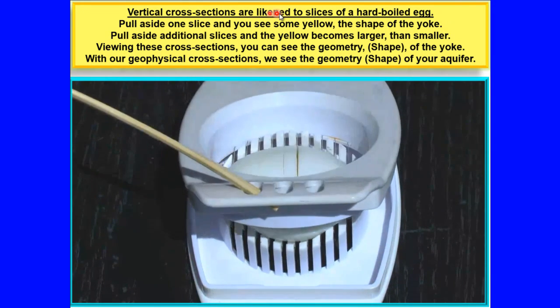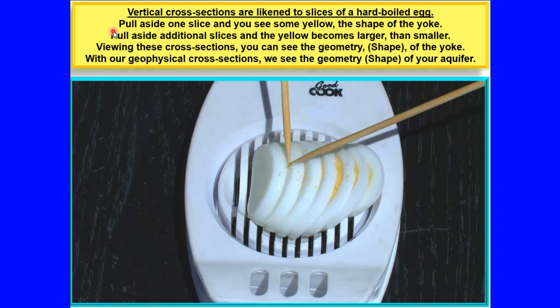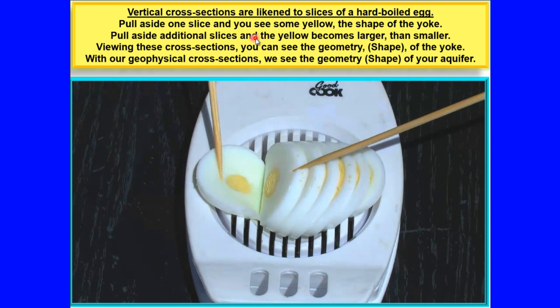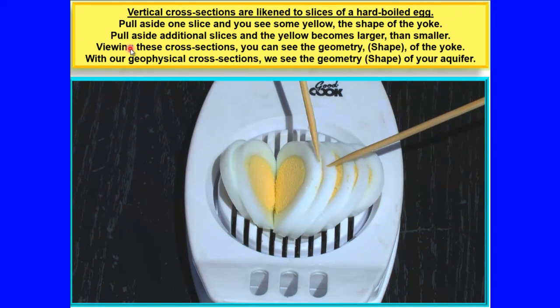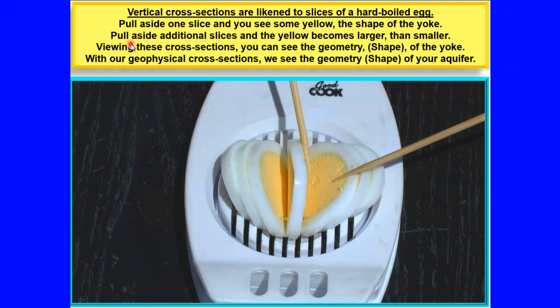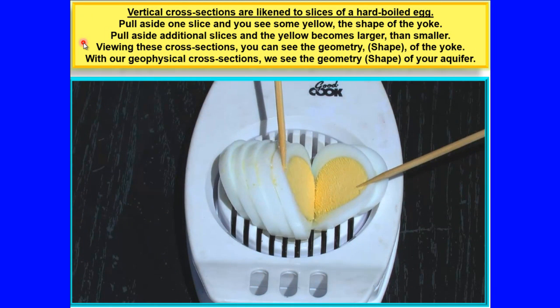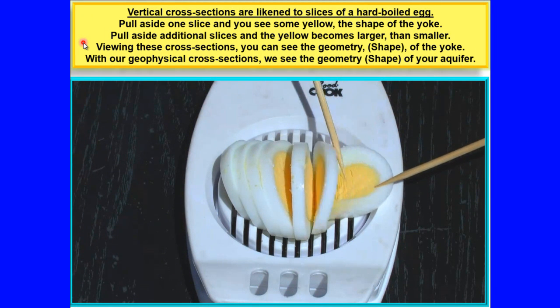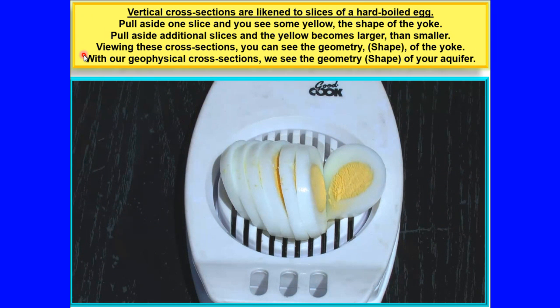Vertical cross sections are like thin slices of a hard-boiled egg. Pull aside one slice and you see some yellow, the shape of the yolk. Pull aside additional slices and the yellow becomes larger, then smaller. Viewing these cross sections, you can see the geometry shape of the yolk. With our geophysical cross sections, we see the geometry shape of your aquifer.